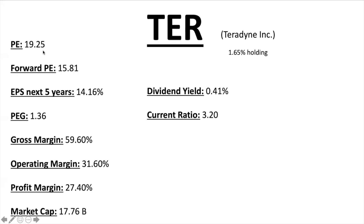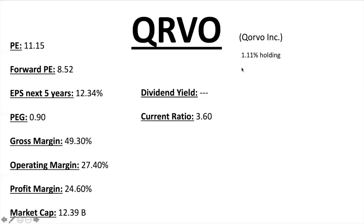Teradyne Incorporated, ticker TER, has a 1.65% holding in the ETF. PE ratio 19.25, Forward PE 15.81, EPS next five years 14.16% — PEG ratio 1.36. All solid numbers, and their margins are great: profit margin over 25%, gross margin over 50% — fantastic. Market cap $17.76 billion, small dividend just under 0.5% annual yield, current ratio 3.2.